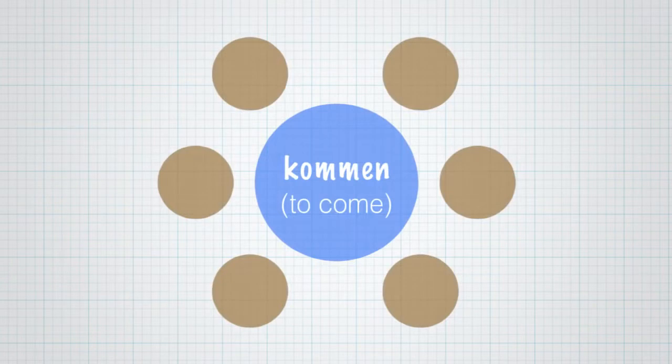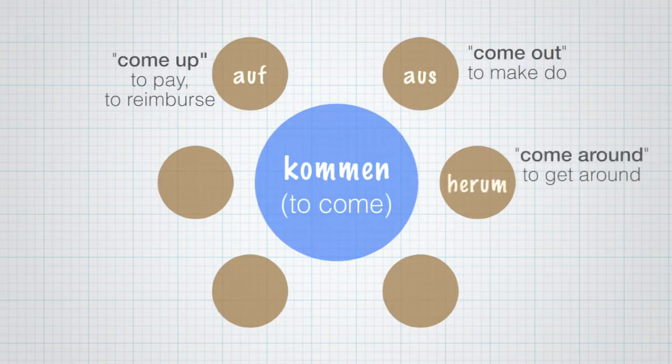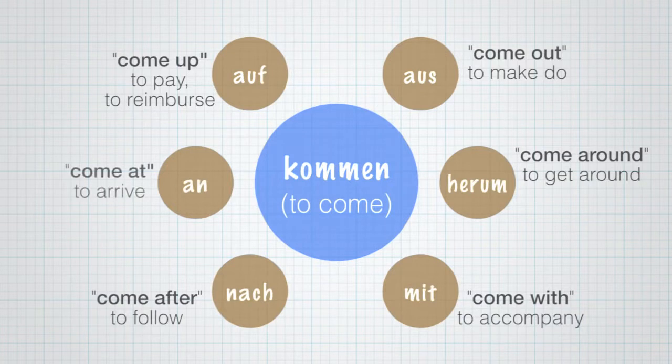Here's an example. In the middle you see the verb kommen, to come. And I have arranged a bunch of prefixes around this word. All of them are added to the front of the verb to create a new verb. So clockwise we've got auf - aufkommen, to come up with something, meaning to pay. Aus - to come out with something, to make do. Herum - to get around. Mit - to accompany. Nach - to follow. And an - to arrive.